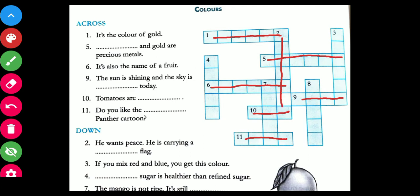Next, third one: if you mix red and blue you get this color. What is the color when we mix red and blue? Purple. Next, that sugar is healthier than refined sugar. So what is the answer? Brown. Next, the mango is not ripe, it's still green. And the last, it's the opposite of white, so black.